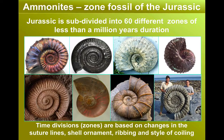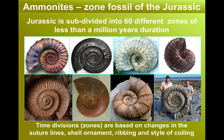To give an example of just how diverse this group became, the Jurassic period itself is subdivided into 60 different zones based on the ammonites, and each of those is less than a million years in duration. All these different features of ammonites — the ornaments on the shells, the ribbing, how their shells are coiled — all changed. But the key pattern is this development of the suture line.